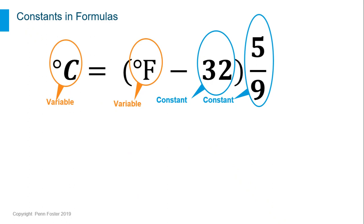Some formulas have constants. For example, the formula for converting from degrees Fahrenheit to Celsius is degrees Fahrenheit minus 32 times 5 ninths, as shown in this formula.